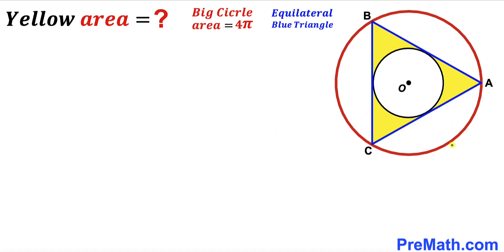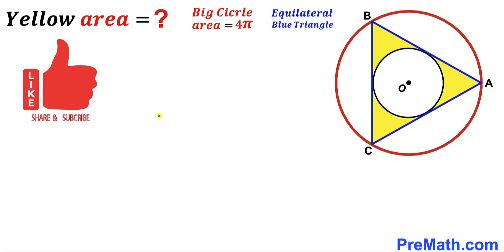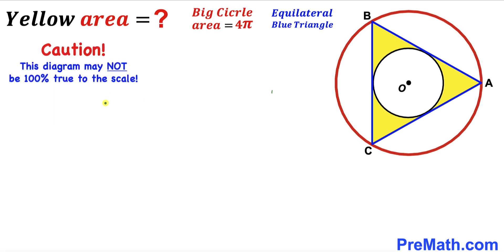Welcome to pre-math. In this video we have two concentric circles that share the same center O, along with an equilateral triangle ABC, as shown in the diagram. The area of the big red circle has been given as 4π square units, and our task is to calculate the area of the yellow shaded region. Please don't forget to give a thumbs up and subscribe. Note that this figure may not be 100% true to scale.